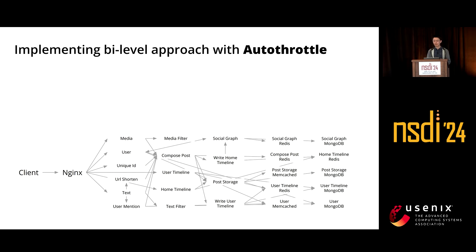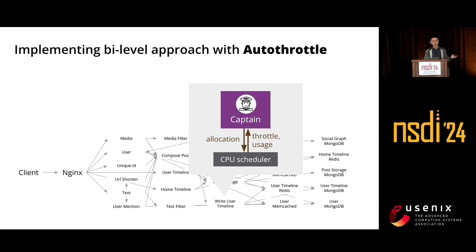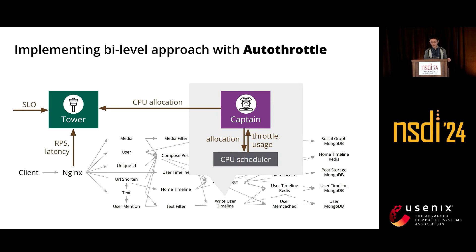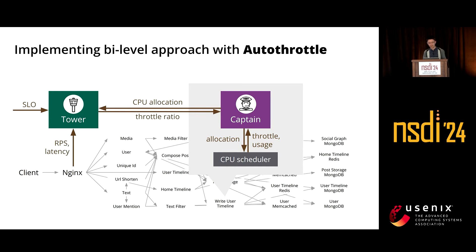Our implementation of this bi-level approach is called AutoThrottle. Each service has a local controller called Captain to quickly adjust CPU allocation. On the application level, there is one global controller called Tower to monitor RPS, end-to-end latencies, and SLO violations. It tries to minimize total CPU allocation while maintaining the SLO. We choose to use throttle ratio as the performance target. Tower will periodically give each Captain a throttle ratio target.